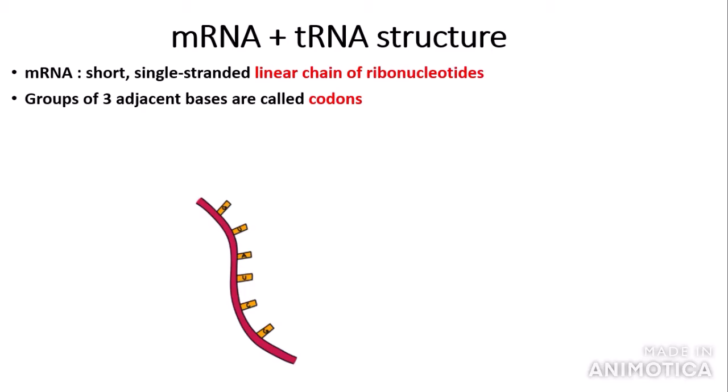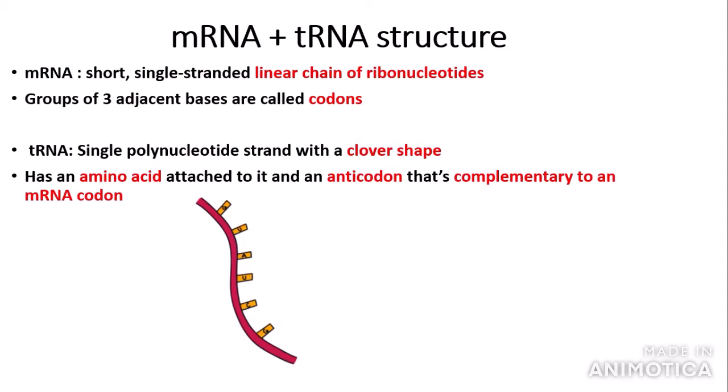Here we have the basic structure of mRNA — it consists of bases such as G, U, A, U, C, G, remembering that in any RNA, thymine is replaced by uracil. As you can see, it is a single-stranded linear chain. tRNA, on the other hand, is also a single polynucleotide strand but has a clover shape. tRNA also has an amino acid attachment site, so an amino acid is attached to each tRNA molecule.